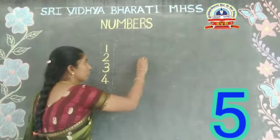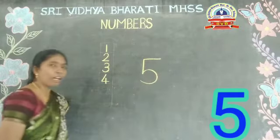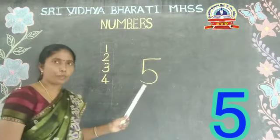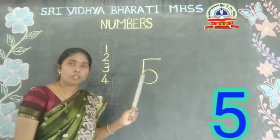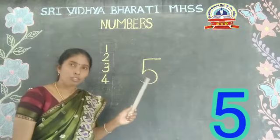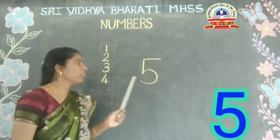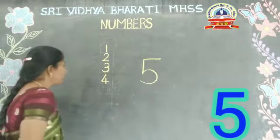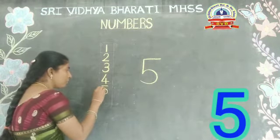Shall we move to the next number? See here. Write. This is number 4. 4, 4, 4, 4. Let us write the number in sequence. Say it with me. 4, 4, 4. Right?